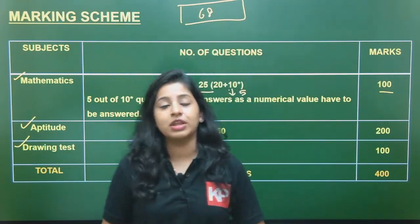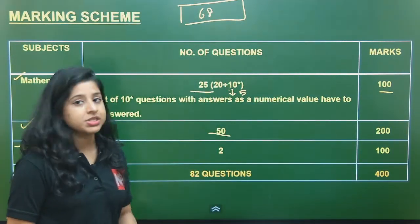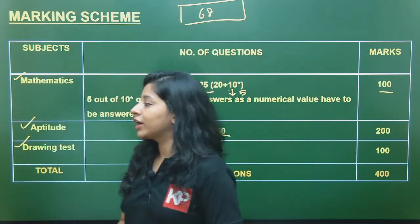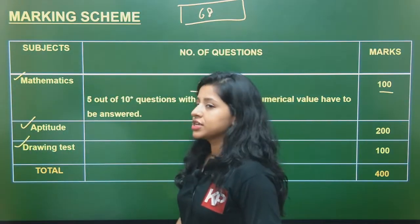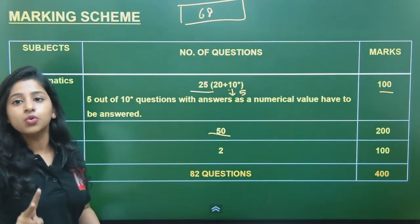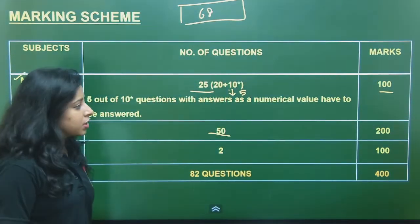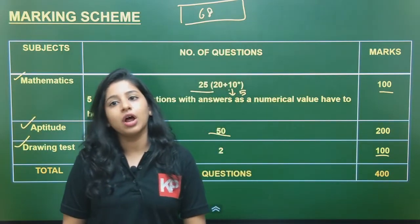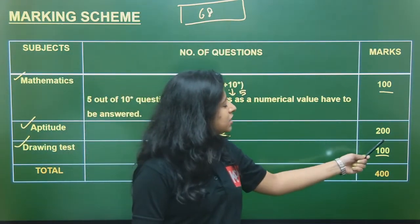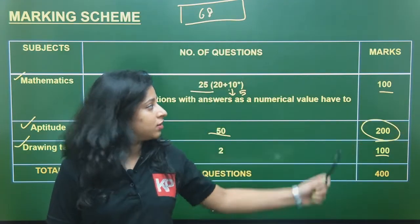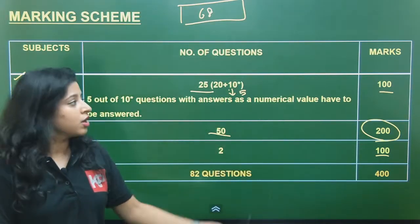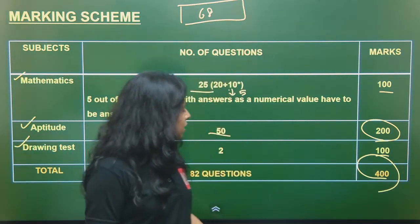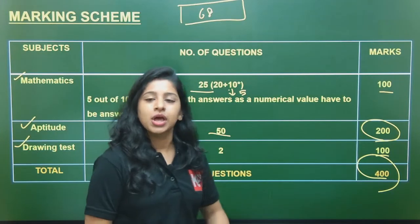The Aptitude section is one of the most major sections, with 50 questions at 4 marks each, totalling 200 marks. The Drawing Test has only two questions, each carrying 50 marks, totalling 100 marks. So the major share of marks is in Aptitude, with 100 marks each for Drawing and Mathematics. There is negative marking in both the Mathematics and Aptitude sections.